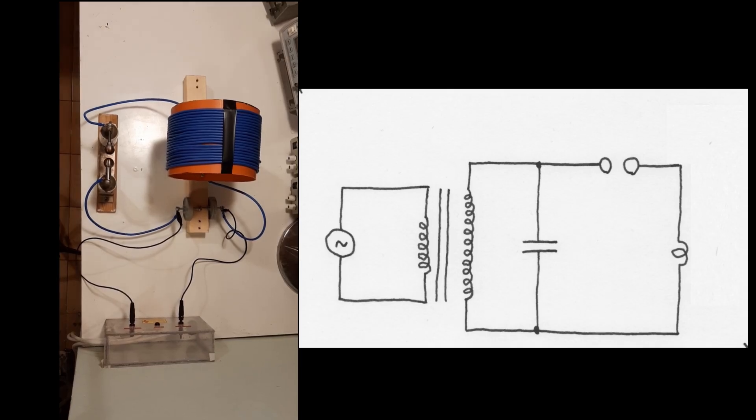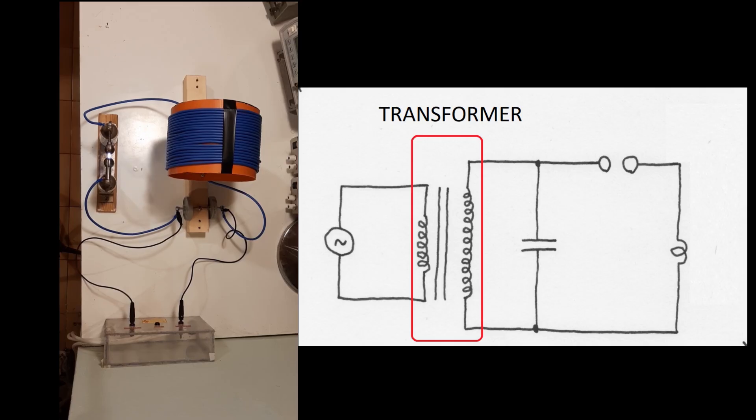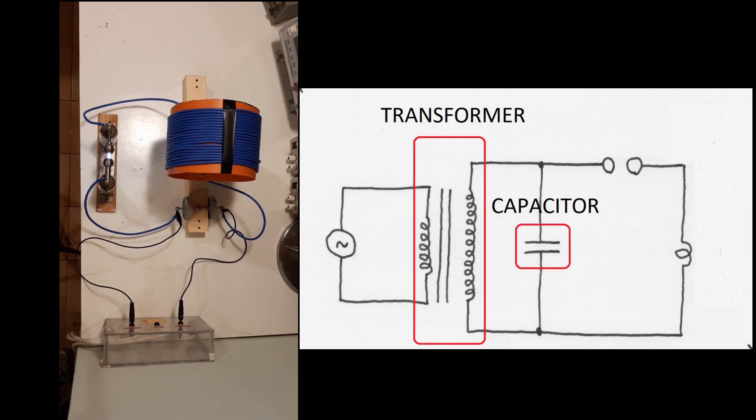The principle of working is the following: the transformer produces 10,000 volts 50 Hz AC output with 230 volts 50 Hz as input. The signal basically charges the capacitor at 10,000 volts 50 times per second in one direction, then the other 50 times in the opposite direction.